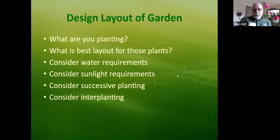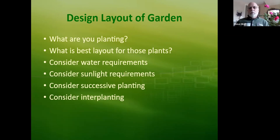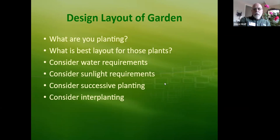Planting is important — you have to have a good design layout before you start. Know what you're going to plant and what's the best layout for those kinds of plants. Tall plants like tomatoes or sweet corn should be planted so they don't block short plants with shade. Consider how much water each plant will take and its sunlight requirements. You might also want to consider successive planting — when your early spring plants like lettuce and radishes are done, follow them up with summer plants.